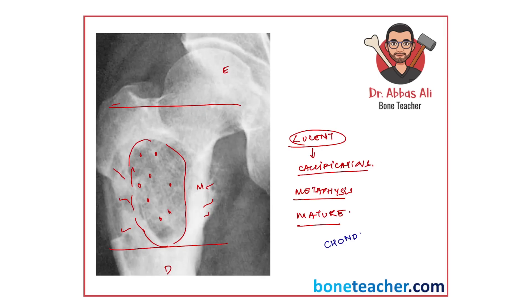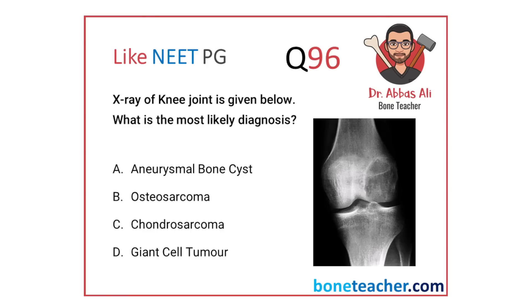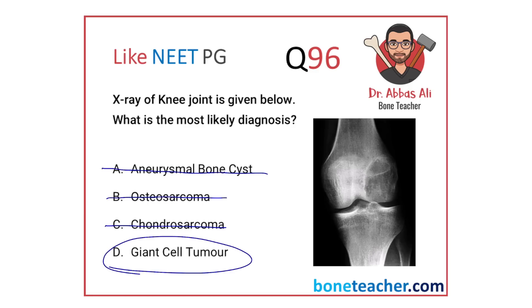The fourth image — metaphysial lesion in a mature skeleton, lucent background with stippled or punctate calcification — that is your classical chondrosarcoma. Now back to the original question: lesion in the epiphysis moving into the metaphysis, mature skeleton, lucent background. It cannot be osteosarcoma — osteosarcomas are dense. It cannot be chondrosarcoma — those are metaphysial with punctate calcifications. It cannot be aneurysmal bone cyst — those are metaphysial and occur with open growth plates. You are left with giant cell tumor.